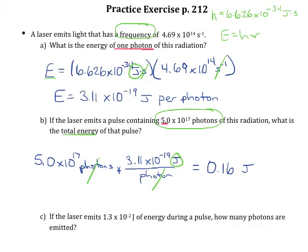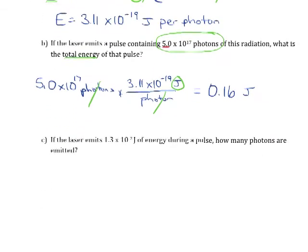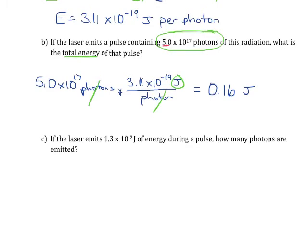So the last part of this problem is kind of working backwards. Now they're telling us how much energy is emitted and they want us to figure out how many photons this is.